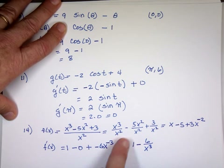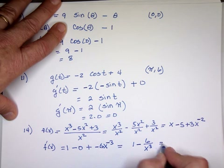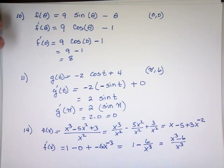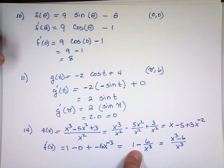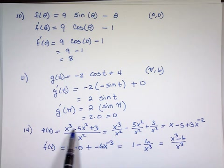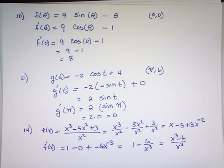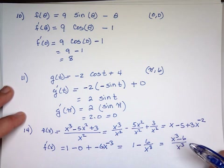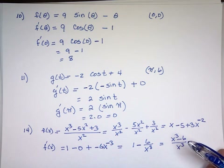If you want to find the LCD, which is x cubed, write 1 as x cubed over x cubed, then combine them into 1 fraction: x cubed minus 6 over x cubed. Note: you can't just take the derivative of the top over the derivative of the bottom — that doesn't work.